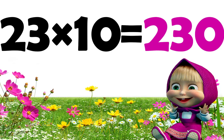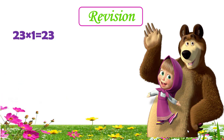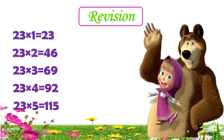Now let's quickly revise the table: 23 ones are 23, 23 twos are 46, 23 threes are 69, 23 fours are 92, 23 fives are 115, 23 sixes are 138.